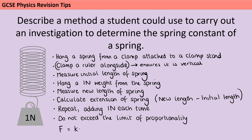We know that force equals the spring constant multiplied by the extension. So if we rearrange that, to get the spring constant we need to do force divided by extension. In this question we're specifically asked what we need to do to calculate the spring constant. All we need is sufficient data to prove we haven't gone past the limit of proportionality — so actually you could complete this practical making just three different length measurements.